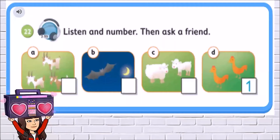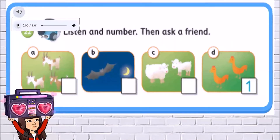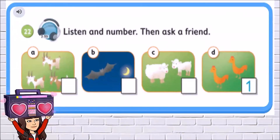Okay, are you ready? Steady. Go. Pupils book, page 64, activity 22. Listen and number, then ask a friend.